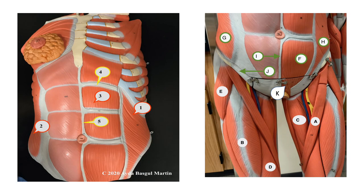Now let's test your knowledge. Can you identify the muscles and structures of the anterior lateral abdominal wall? Focus on the photo on the left. Number one is internal oblique, number two is external oblique, number three is rectus abdominis, and number five is linea alba. When you look at the picture on the right, J is showing the inguinal ligament, as I promised to show you. I hope you found this video helpful — remember to subscribe to my channel if you haven't done so. Have a good day, bye-bye.